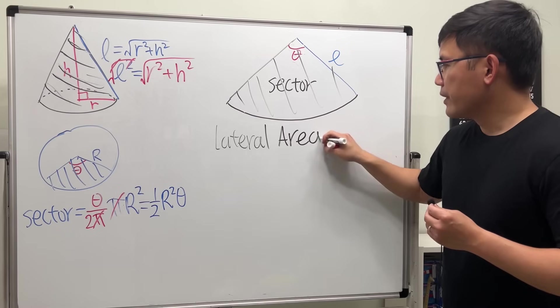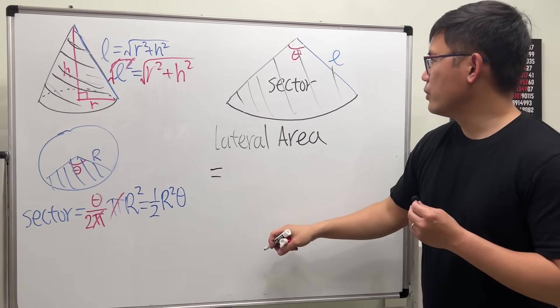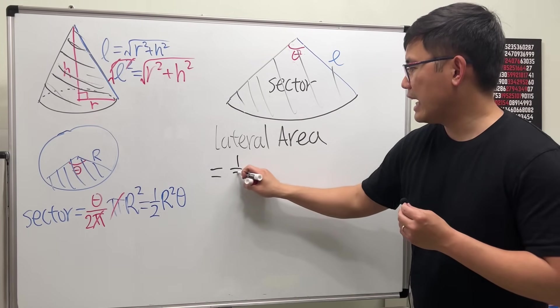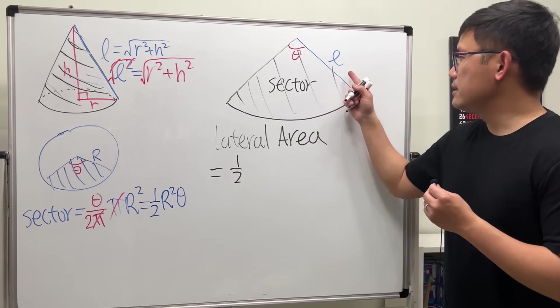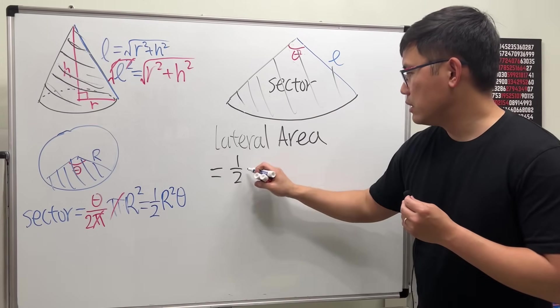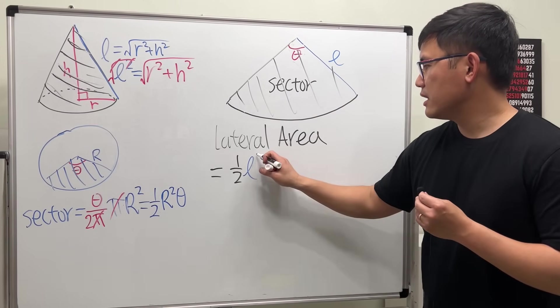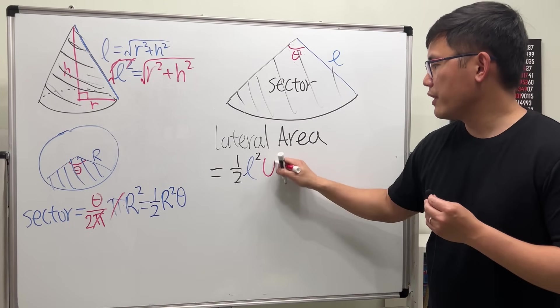So lateral area, this right here is just equal to, well, we have one half, and the R in this case is the L, and then we will square that, and then we also need the angle theta.